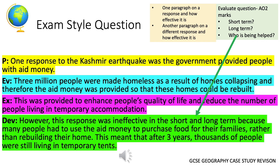In terms of development, this is where the AO2 evaluation marks are included. It states that however this response was ineffective in the short and long term because many people had to use the aid money to purchase food for their families rather than rebuilding their home. This meant that after three years, thousands of people were still living in temporary tents. Note that the short and long term are both mentioned, and an extra piece of evidence is used. Remember, for this question you need two paragraphs, not just the one shown on screen.